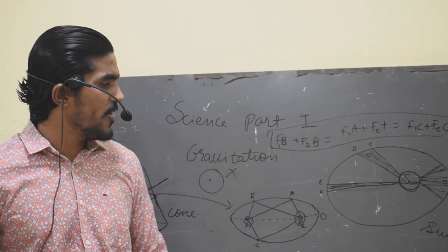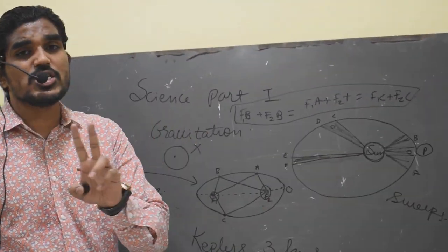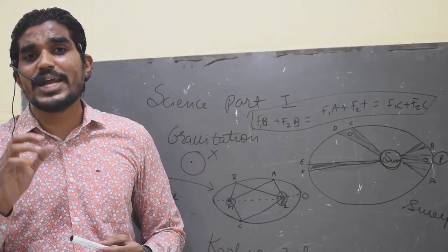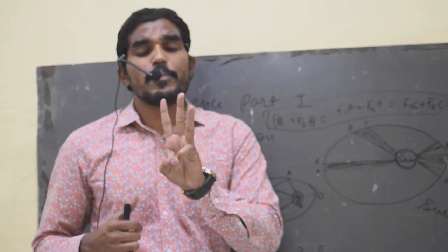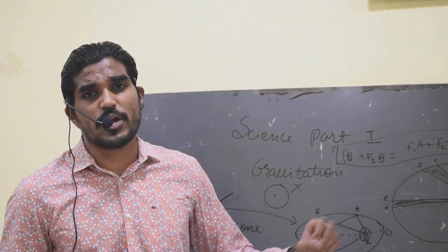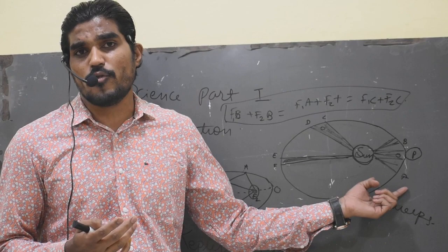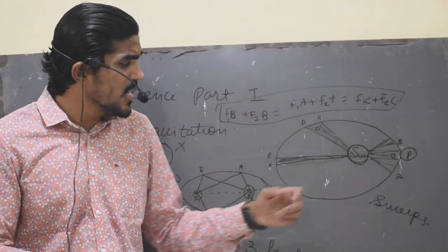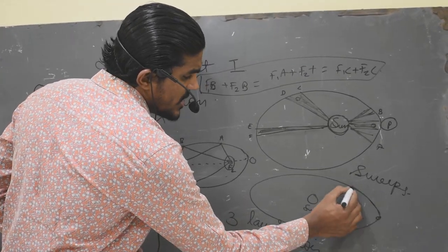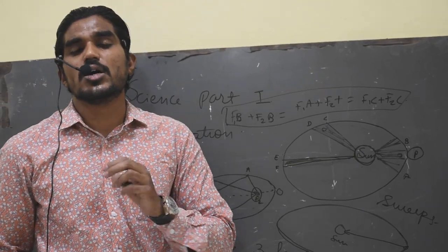Now let's proceed toward the third law of planetary motion. Kepler's third law gives the relationship between the period of revolution of the planet and the distance of the planet from the sun. For example, if this is the sun and this is a planet revolving around the sun — the third law relates how much time is taken by the planet to revolve and what is the distance of the planet from the sun.